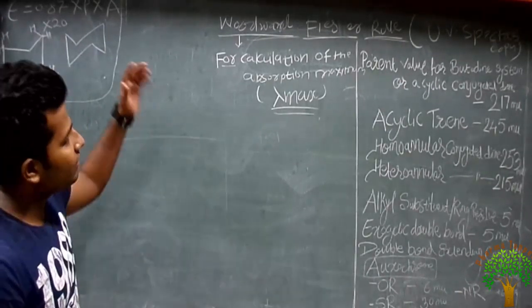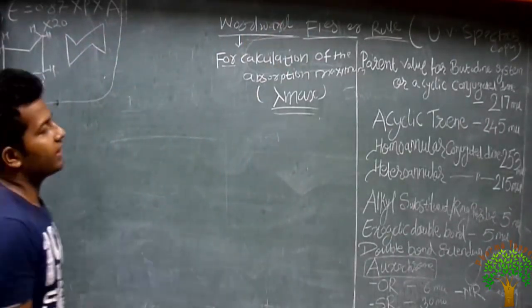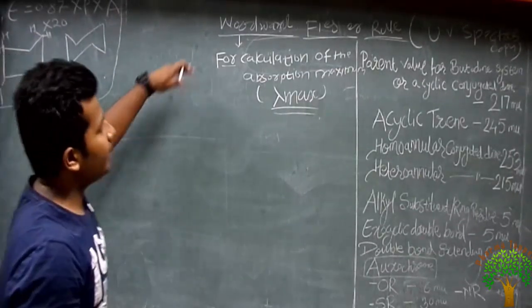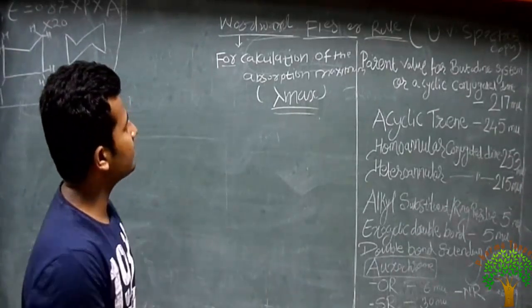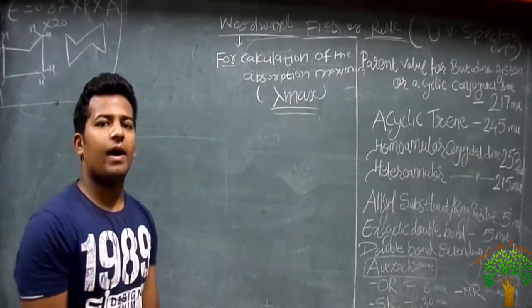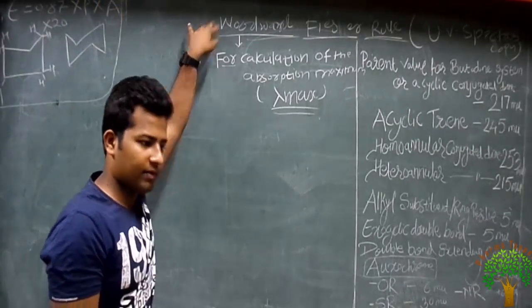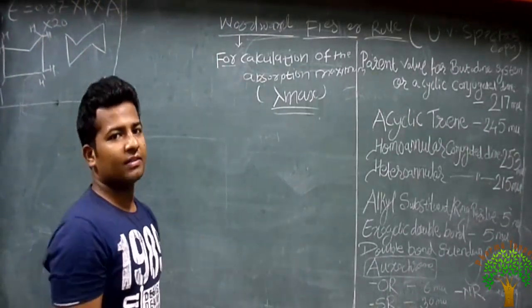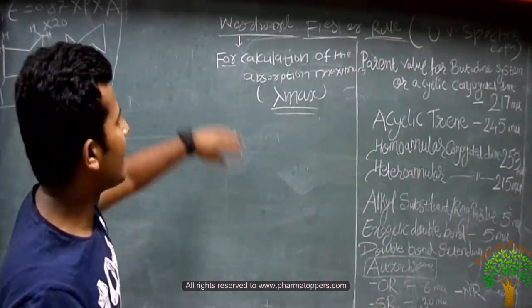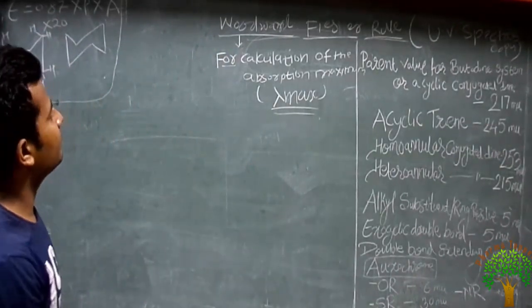This rule is named after Woodward and Fisher — these two are scientists, that is why it is called the Woodward-Fisher rule. Mainly in various competitive exams — Young Farm, E-Farm, G-PAD, NIPER, any exam — a compulsory question will be asked on the Woodward-Fisher rule. In today's exam, NIPER 2015, there are two questions on the Woodward-Fisher rule, so we first discuss this very important rule in UV spectroscopy.